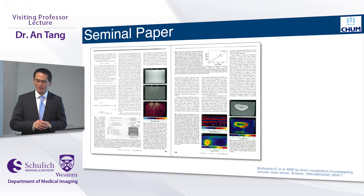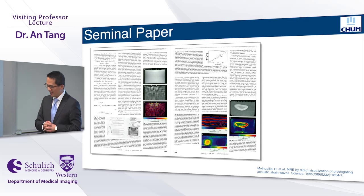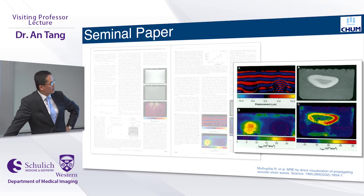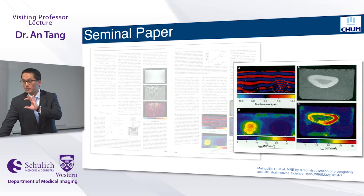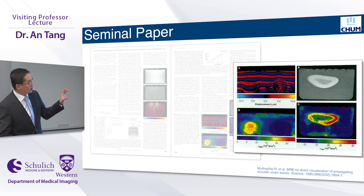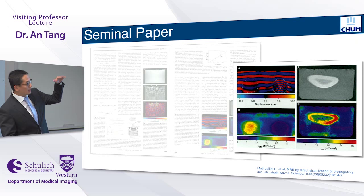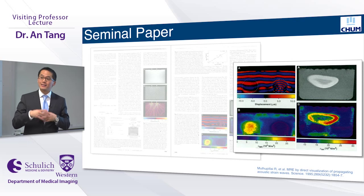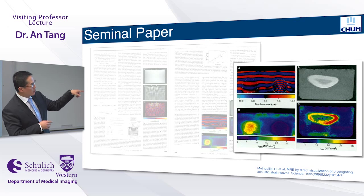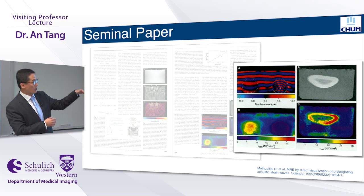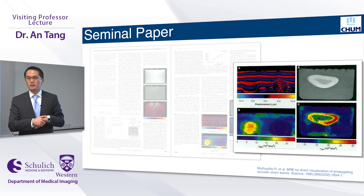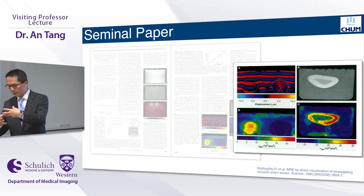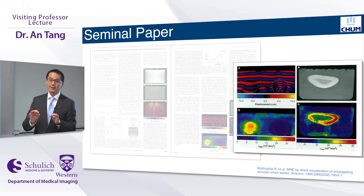This is a screen capture from the seminal paper published in Science in 1995. The authors were very prescient. This color image shows on the left an agar phantom with two gelatin inclusions at different concentrations — a soft inclusion and a stiffer inclusion. You can see that the wavelength generated at the surface is fairly constant, then either elongates or shortens depending on inclusion stiffness. On the bottom row is an elastogram or stiffness map, with color coding representing relative stiffness. On the right is the anatomical proof of concept — an explanted liver placed into an agar phantom.